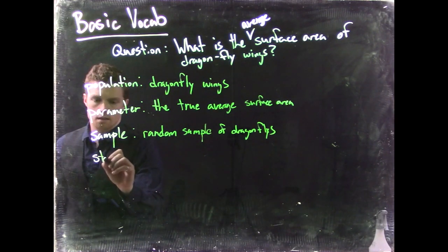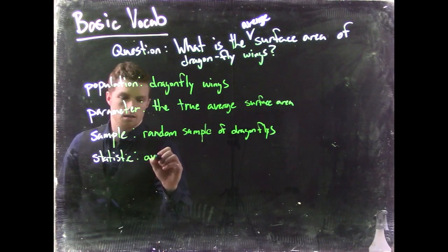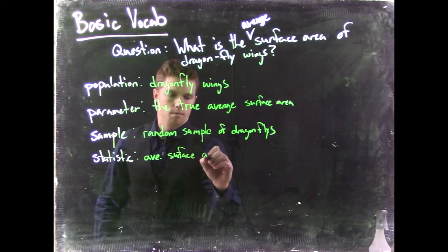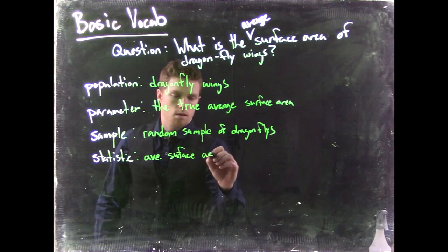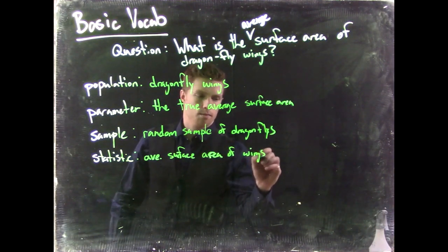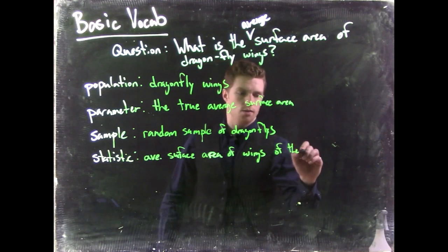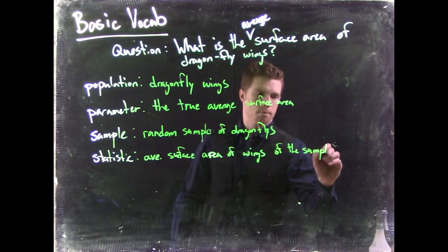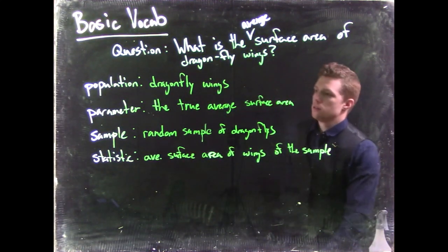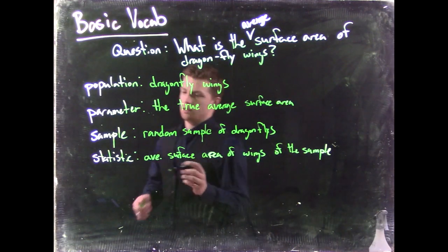And then our statistic would be average surface area of wings of the sample. So there we go. We've got our population, we've got our parameter, we've got our sample, and our statistic. So let's also grab what is our variable.